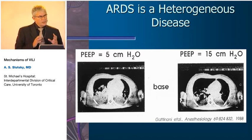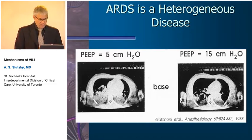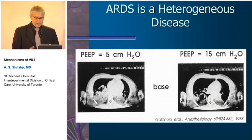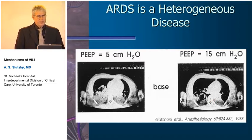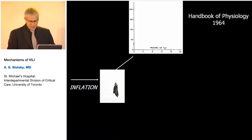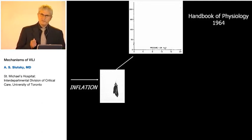This heterogeneity has implications for how we ventilate patients. You can imagine that if you're ventilating with a normal-sized tidal volume, but only a fraction of the lung is available to receive that volume, you might overdistend certain lung units. When PEEP is applied — here with 15 centimeters of water — you can see recruitment of some lung units, but there's still heterogeneity.